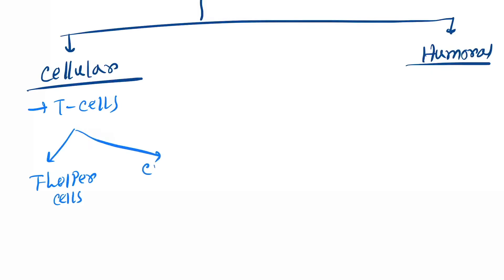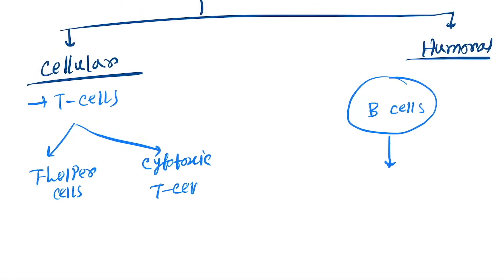And humoral: first the B cells get activated, next B cells stimulate the plasma cells, and plasma cells will form the antibodies. They will cause the formation of antibodies.